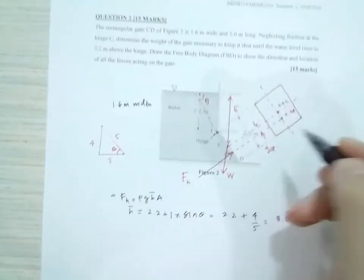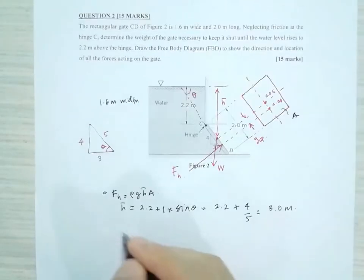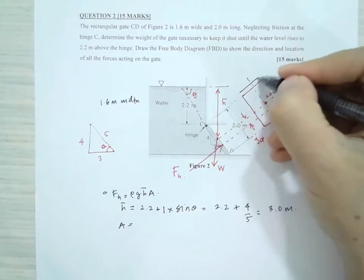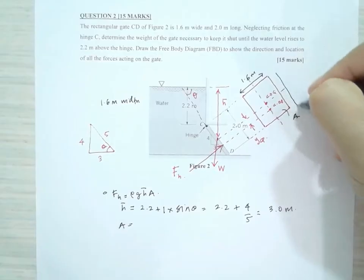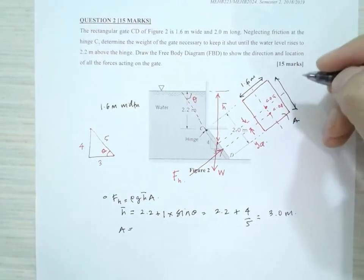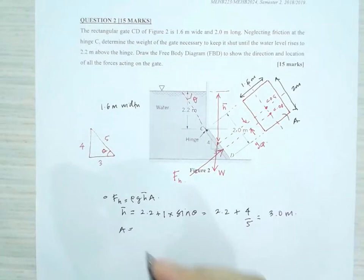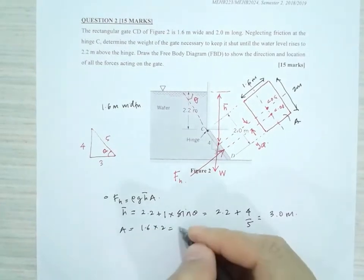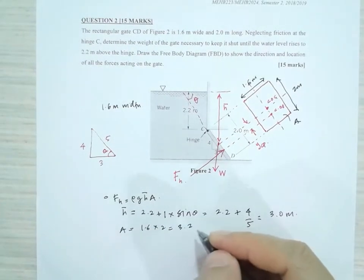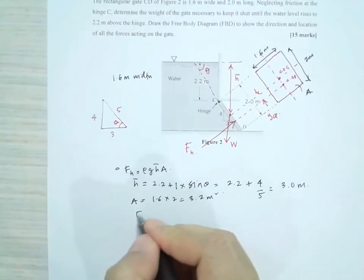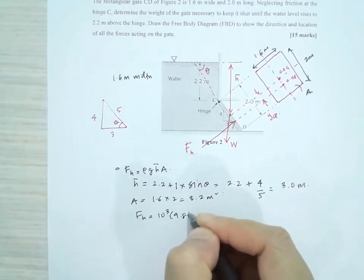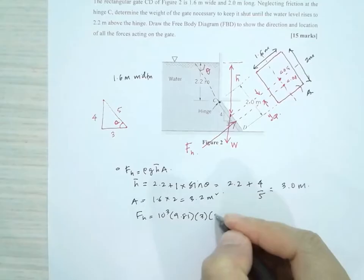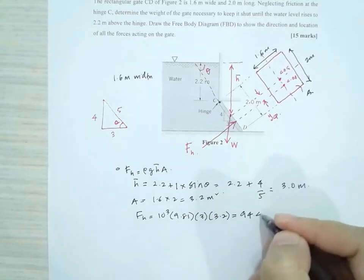The area is the area of this. Since the width is 1.6 meters and the height is 2 meters, A = 1.6 × 2 = 3.2 m². That will give us F_H = ρg × 3 × 3.2 = 94.46 kN.